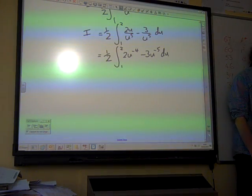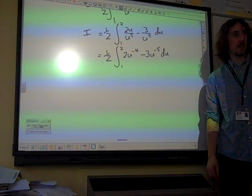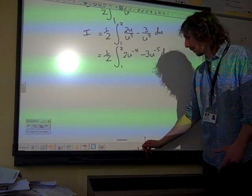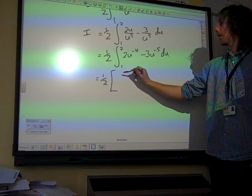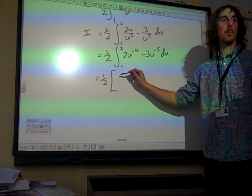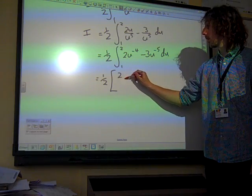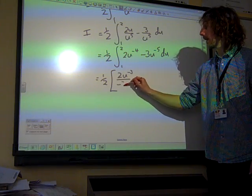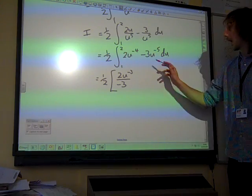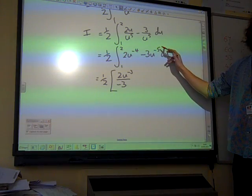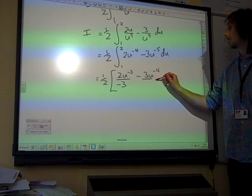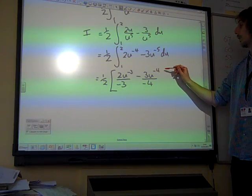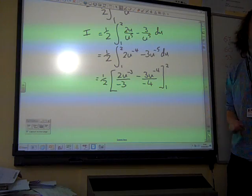So now we're ready to integrate it. We've got to be careful with the negative signs. We add 1 to the power, divide by the new power. Still got that half there. Add 1 to the power, that's 2u to the minus 3. Divide by negative 3. Add 1 to the power there. That would make it minus 3u to the minus 4. That would make it negative 4. Between 1 and 2.